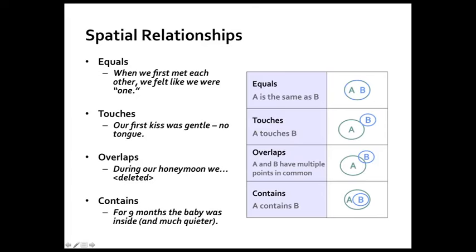There are seven major spatial relationships that I want to cover here, and I'm going to do four in this one and three in the next slide. They have the equals principle. That's where you have entity A is the same as entity B. In a relationship, it can be like when you first met your spouse and you felt like you were one thing. You were something amazing together.